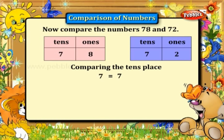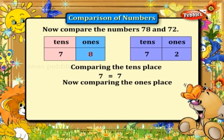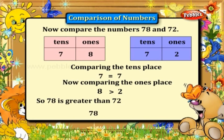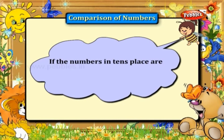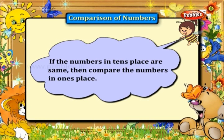So we now have to compare the numbers in the ones place. In 78, 8 is in the ones place, and in 72, 2 is in the ones place. Compare the numbers in the ones place: 8 is greater than 2. So 78 is greater than 72. The rule is, if the numbers in the tens place are the same, then compare the numbers in the ones place.